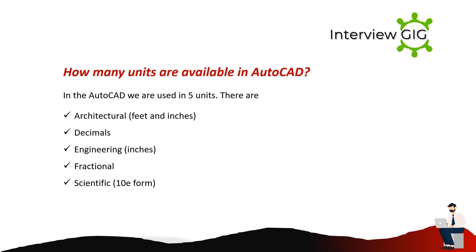How many units are available in AutoCAD? In AutoCAD there are 5 units used: 1. Architectural Feet and Inches, 2. Decimals, 3. Engineering Inches, 4. Fractional, and 5. Scientific Form.